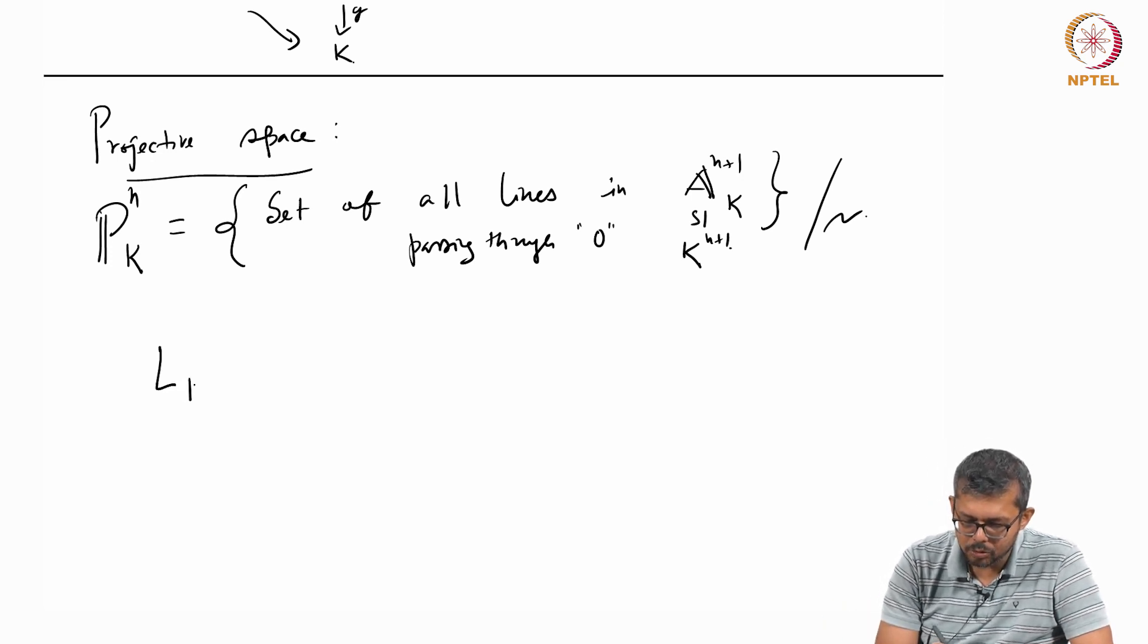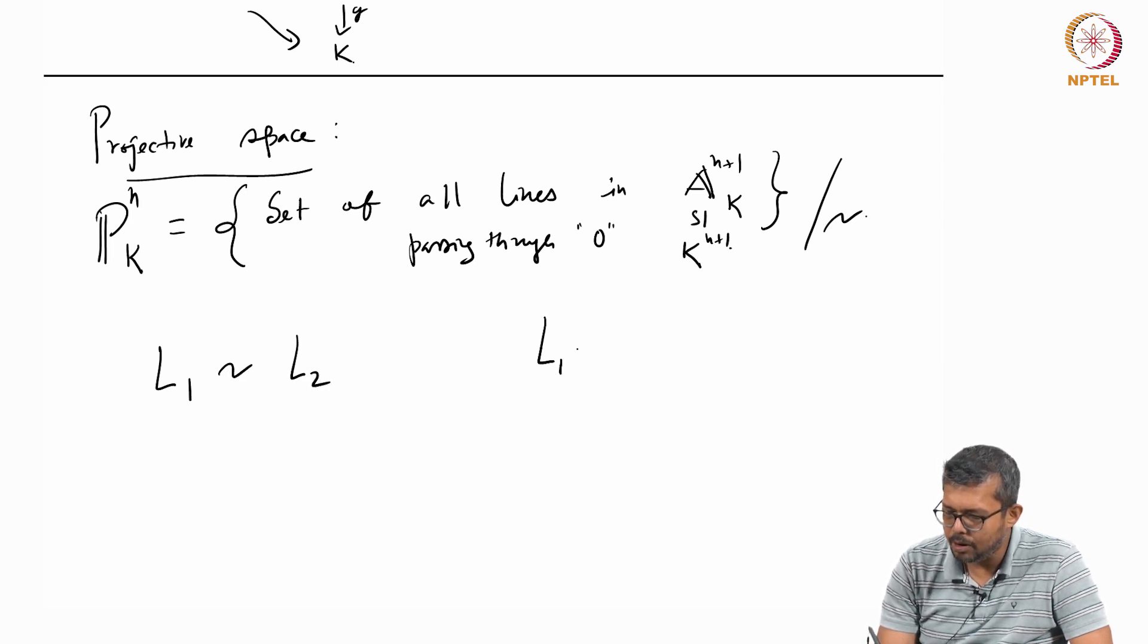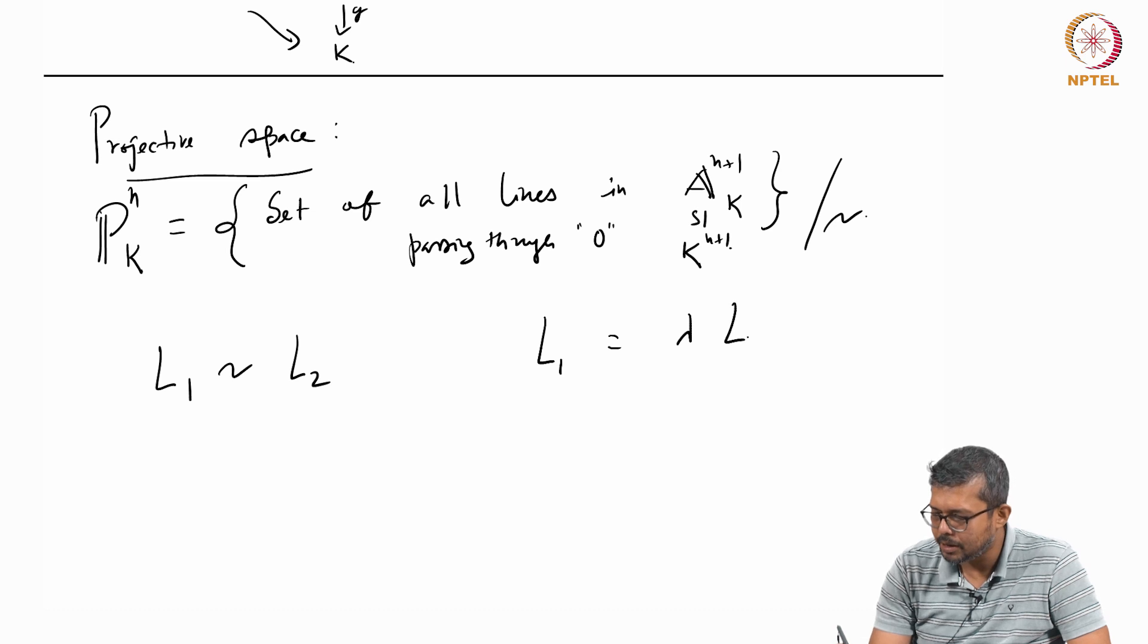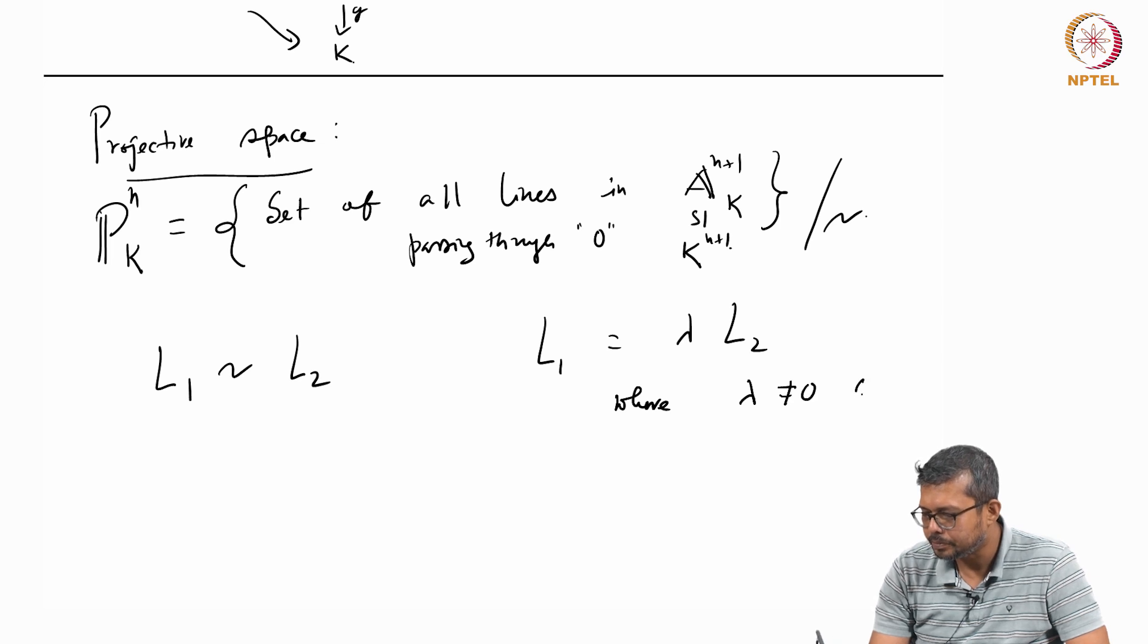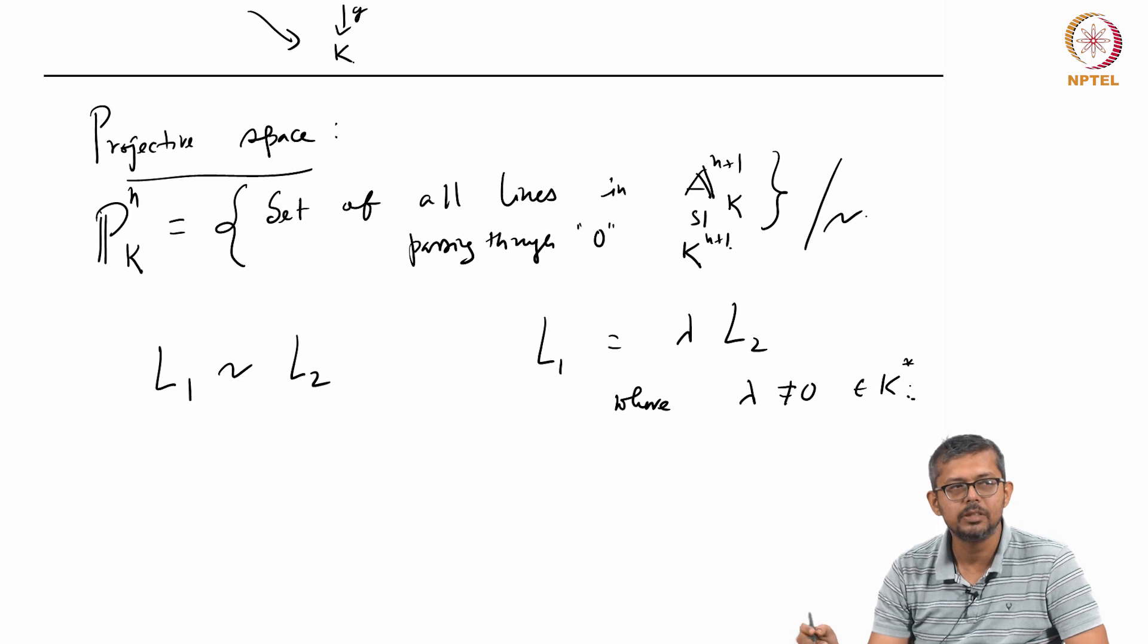And the equivalence relation is that I take two lines L_1 and L_2. I say L_1 is equivalent to L_2 if L_1 equals lambda times L_2, where lambda is some non-zero scalar. K^* means K minus 0.